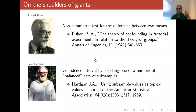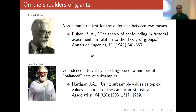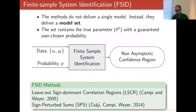Let me give a short literature review. In 1942, Fisher proposed a non-parametric test for difference between two means — non-asymptotic and with minimal distributional assumptions, which was very interesting. After that, Hartigan improved that work using balanced sets from group theory to find non-asymptotic confidence regions for the mean of a random variable. Inspired by these two works and some randomized methods, this class of finite sample system identification methods was proposed. Unlike instrumental variable, which inputs data and gives one single model, finite sample system identification delivers a model set — a confidence region.